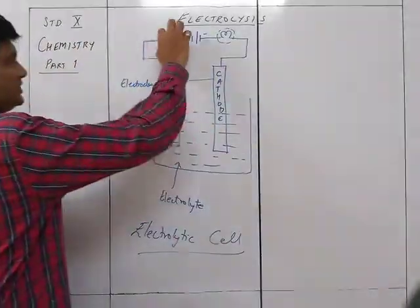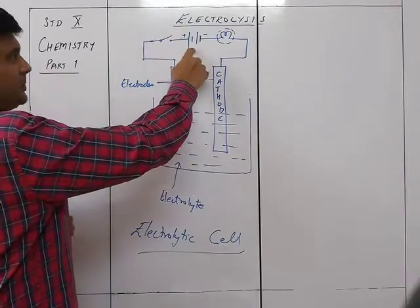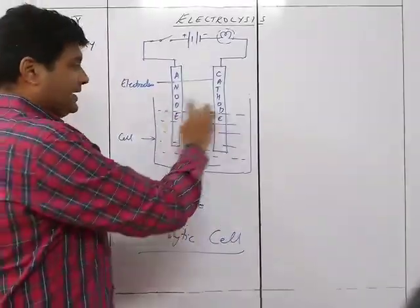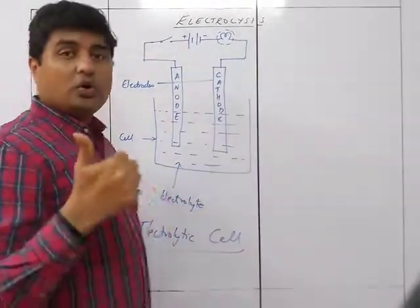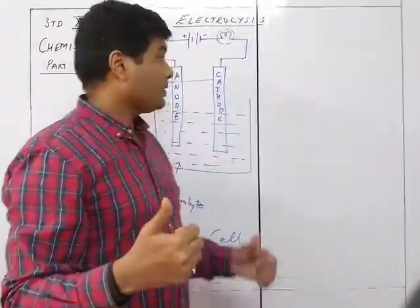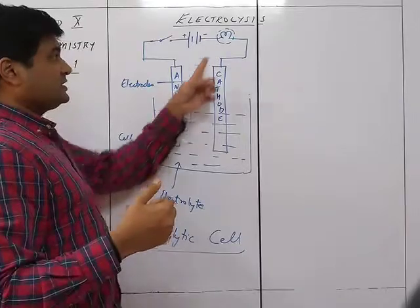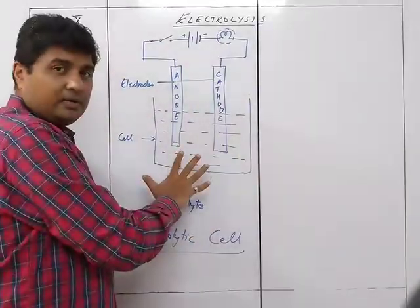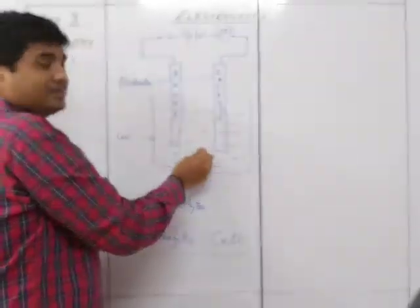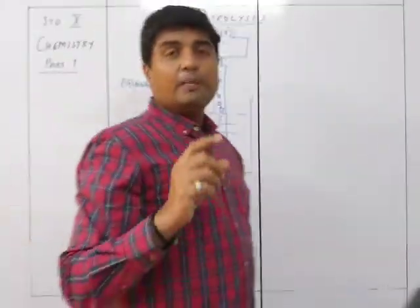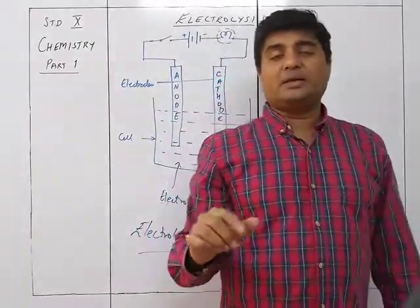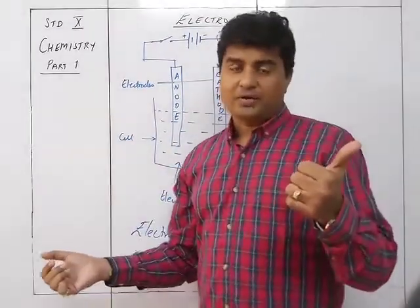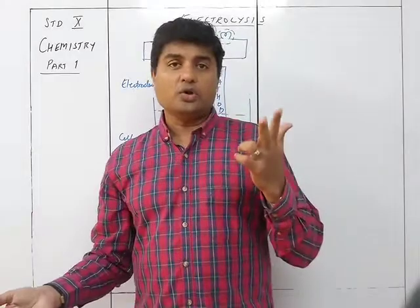The current remaining the same, the glow of the bulb indicates whether the electrolyte is a strong electrolyte, weak electrolyte, or a non-electrolyte. If the bulb glows brightly, it is a good electrolyte. If it glows dimly, it is a weak electrolyte, and if it does not glow at all, it is a non-electrolyte.